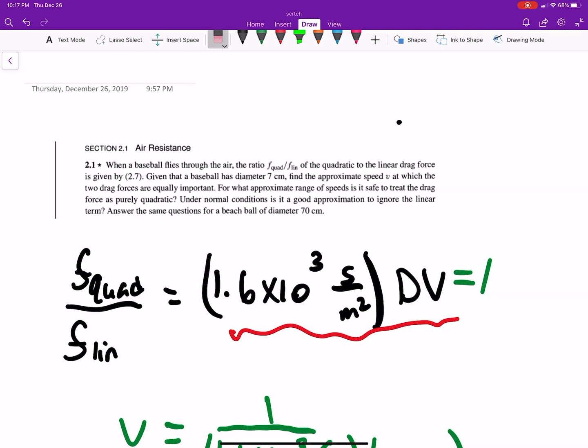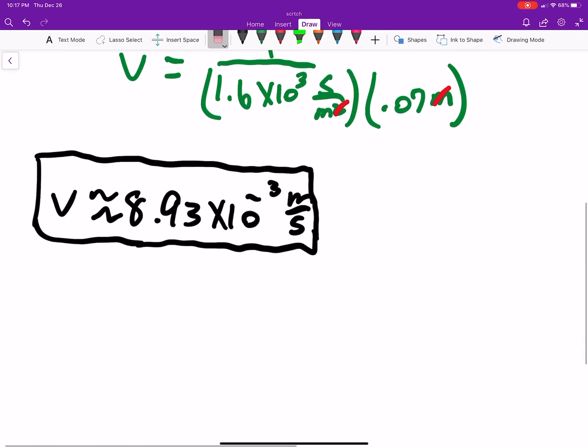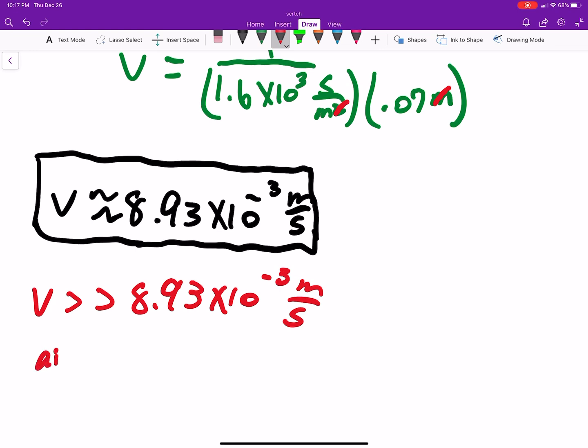So when the velocity is significantly greater than 8.93 times 10 to the negative third meters per second, it's okay to approximate with just the quadratic component.